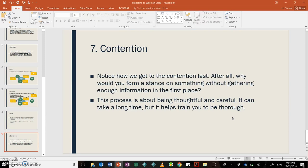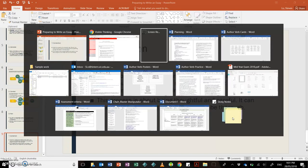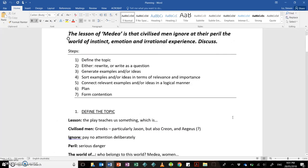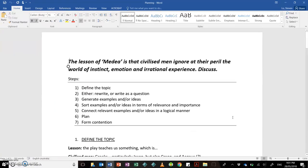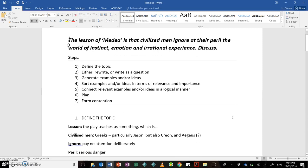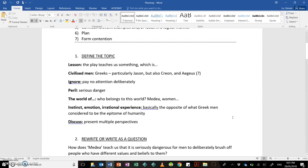We've just gone through the seven steps. Now, I'm going to show you an example based on this essay topic which is related to the text, the play Medea by the ancient Greek playwright Euripides. The topic is, 'The lesson of Medea is that civilized men ignore at their peril the world of instinct, emotion, and irrational experience—discuss.' Now, here I've defined the topic. You may wish to pause the video just to look at this section here.